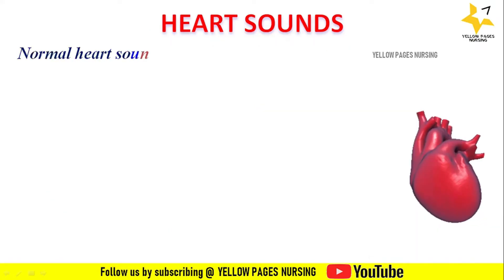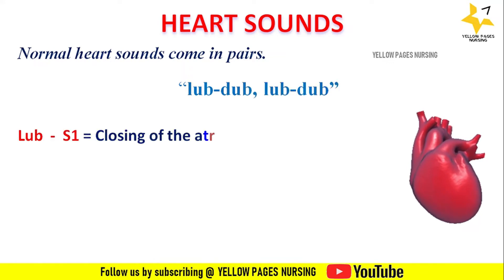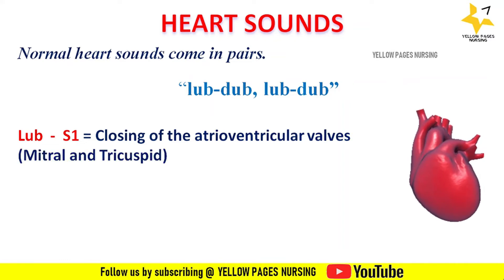The sounds are often described as lub-dub, lub-dub. The sound 'lub' is S1, which is created by the closing of the atrioventricular valves — that is, the mitral and tricuspid valves. This corresponds with the carotid pulse. Ventricular systole is heard loudest at the mitral and tricuspid areas.